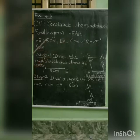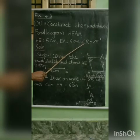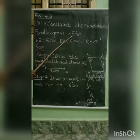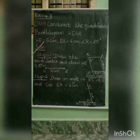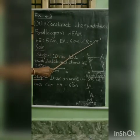For this parallelogram, the given measurements: HE is equal to 5 cm, EA is equal to 6 cm, then angle R equal to 85 degree. Using these measurements to form the parallelogram HEAR.